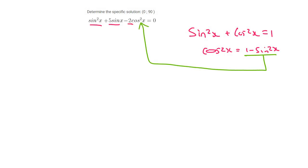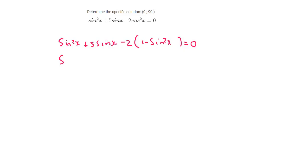But notice there's a 2 there. So what you do is you just say sin squared x plus 5 sin x minus 2 bracket 1 minus sin squared x and that's equal to 0. And so that's going to be sin squared x plus 5 sin x minus 2 plus 2 sin squared x.